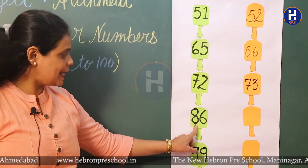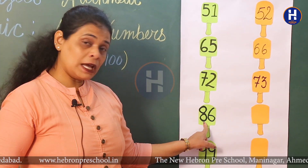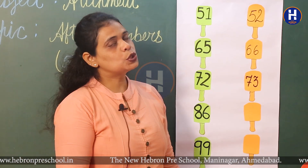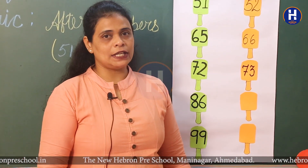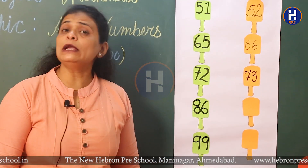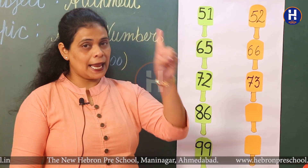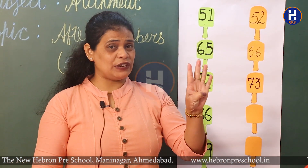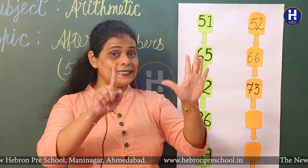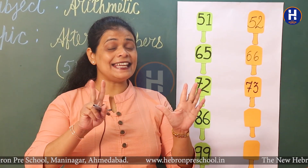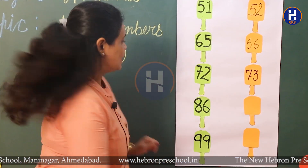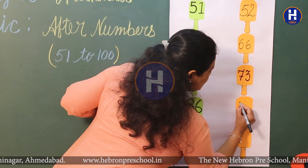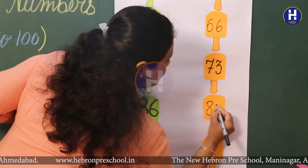Now go to the next number. Which number is this? 86. So start forward counting from number 81: 81, 82, 83, 84, 85, 86, 87. Yes! After number 86, next comes 87.